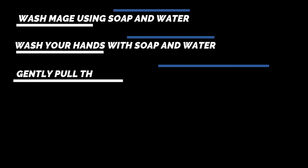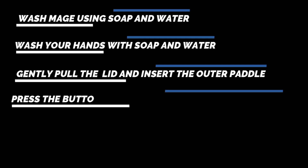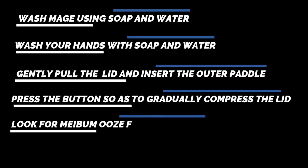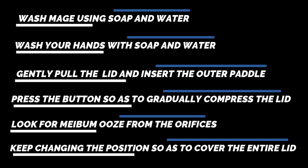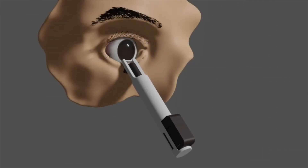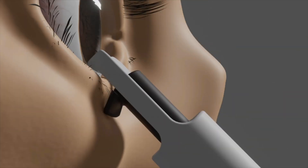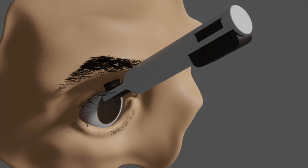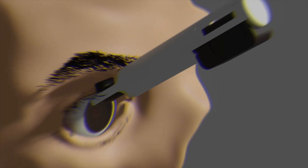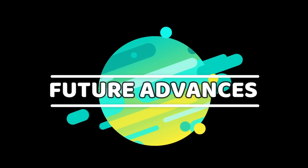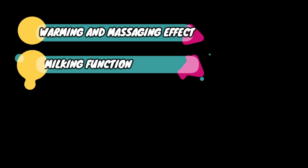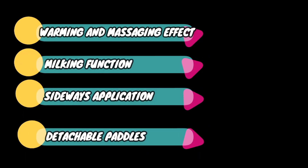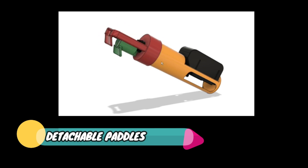So, how to use MAGE: the user has to wash the device and their hands using mild soap and water to avoid any contamination. The lid is gently pulled out and the outer fixed paddle is inserted. The button is pressed to give a gradual graded compression — the meibum ooze should now be visible. Keep changing the position and repeating the same steps so as to cover the entire lid margin, then repeat the same for the upper lid. In future versions of this device we would like to include a warming and massaging effect, a milking function, sideways application, and detachable paddles.